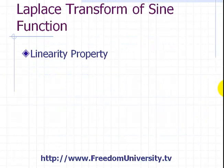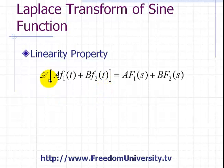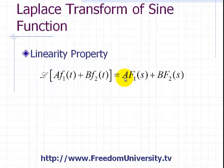To find the Laplace transform of a sine function, you need to know two things. You need to use the linear property, which I showed in earlier videos, which says that when you have a linear combination of inputs f1(t) and f2(t), scaled by constants a and b, then the Laplace transform of this linear combination is equal to the linear combination of each individual Laplace transform of the corresponding function, again scaled by constants a and b.